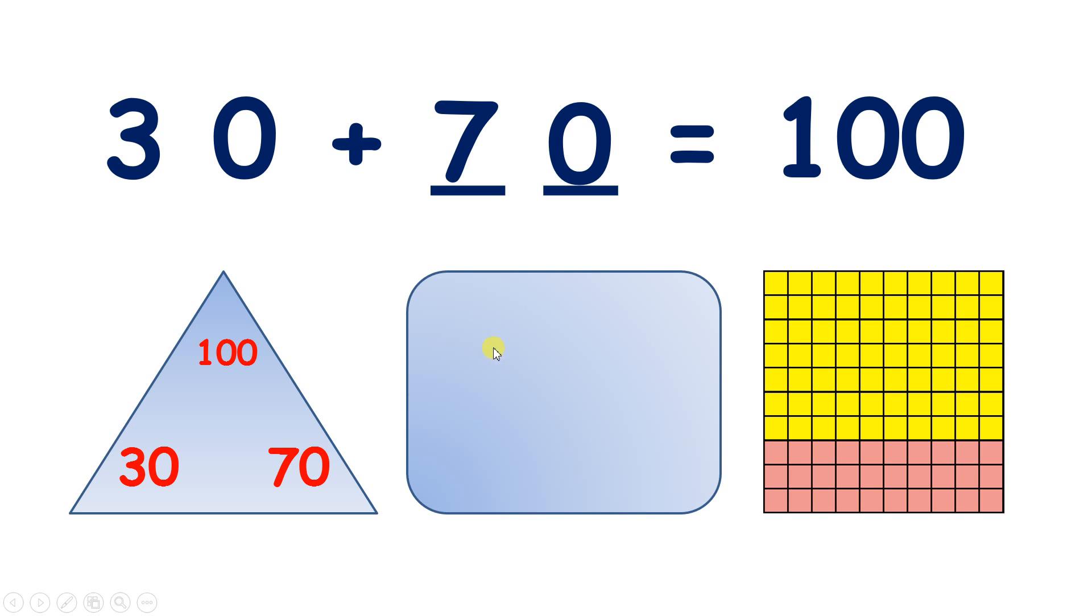We know that 70 add 30 is 100. We know that 100 minus 70 equals 30. And we know that 100 minus 30 equals 70.